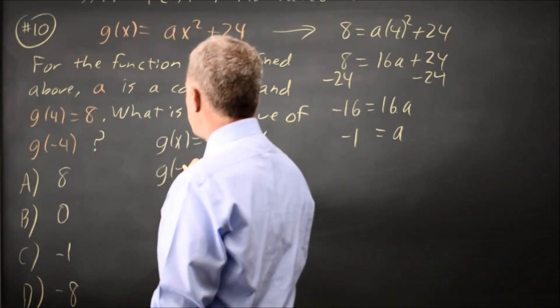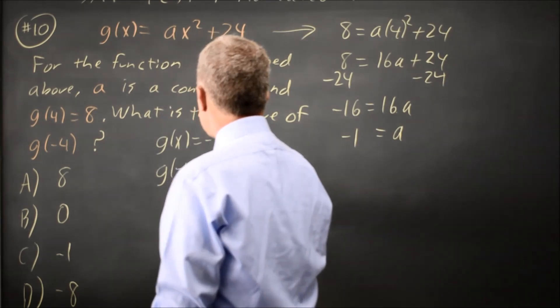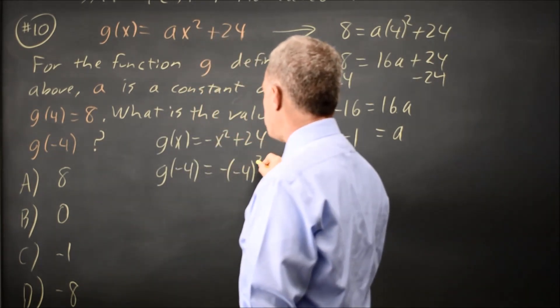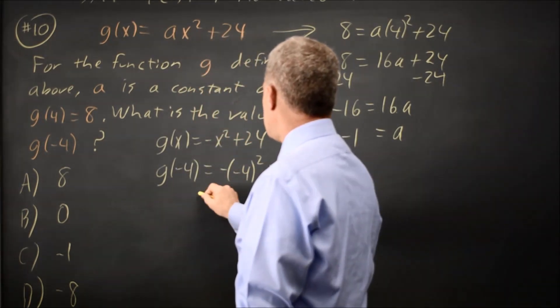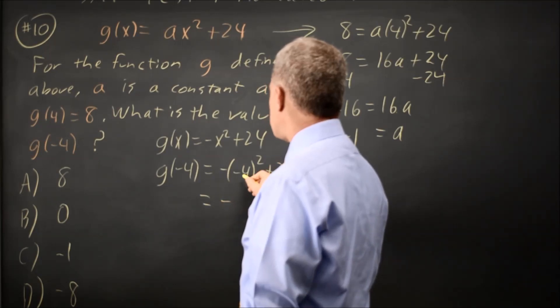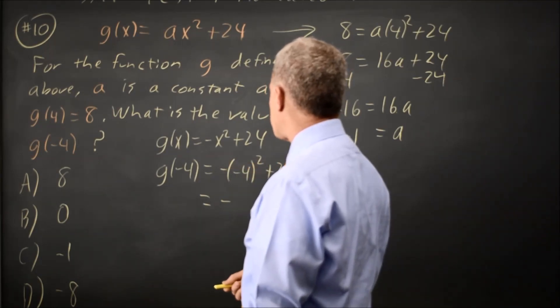So, g of negative 4. g says, whatever's in the parenthesis, you take the negative of that number squared and add 24.